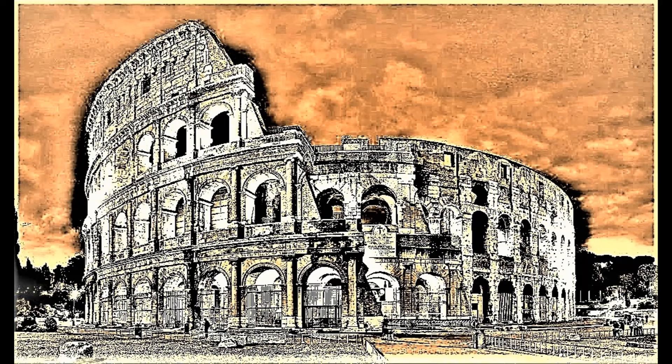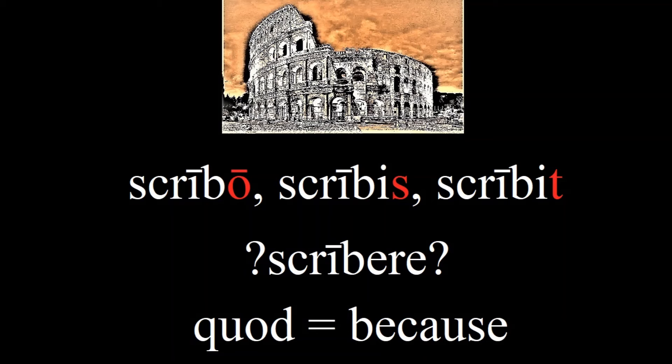Now we're going to read a story — that's pretty amazing after just two lessons, right? It will be a very simple story using mostly what we've learned. There are two words you'll have to guess. Think about what the infinitive of a verb means in English — what does scribere mean? I'll give away that the word quod means 'because,' since that would be hard to guess.